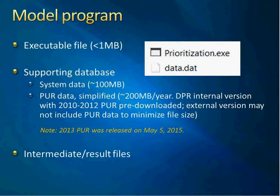Let's start with the model program. There are two files: prioritization.exe, a small executable file, and data.dat, a supporting database with two parts. The first part is system data including pesticide property information and index tables for PUR. The second is the actual PUR data, simplified and reformatted, organized by year — about 200 megabytes per year. For our DPR internal version, the file includes the most recent three years of PUR data. New data for 2013 was recently released, so for demonstration I'll use 2010–2012.